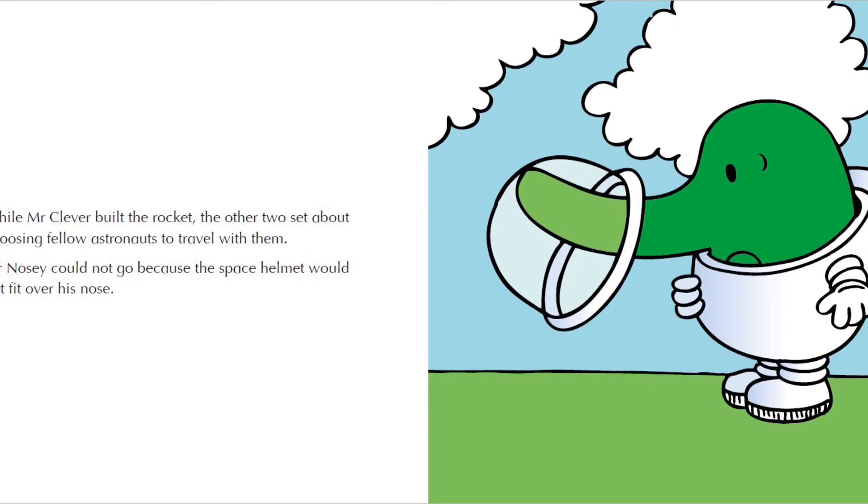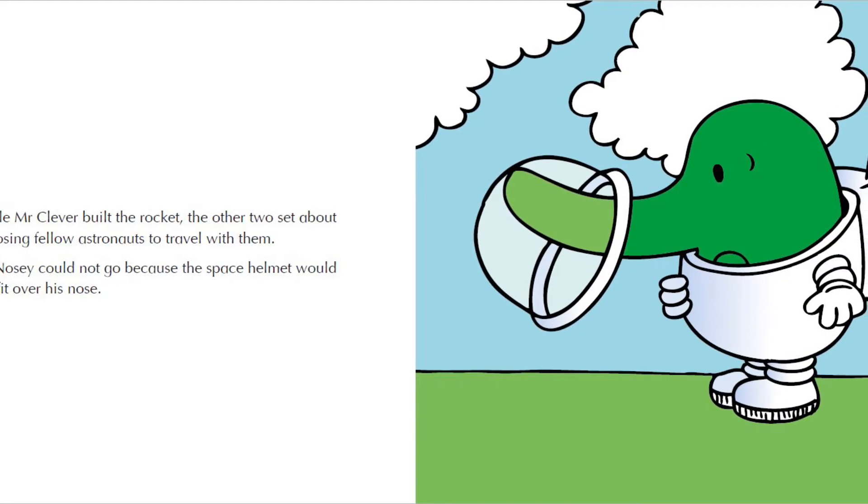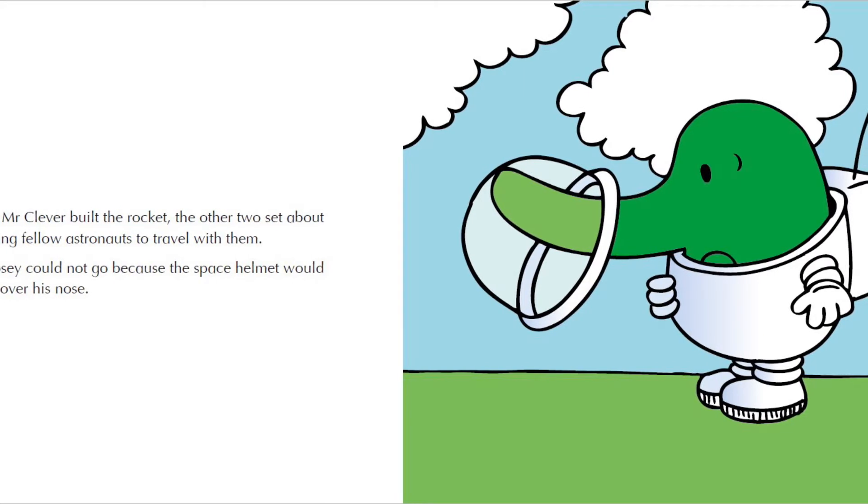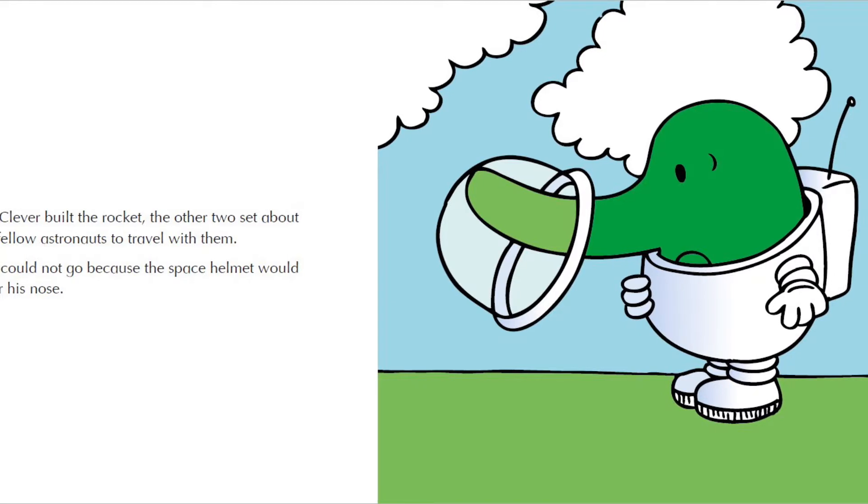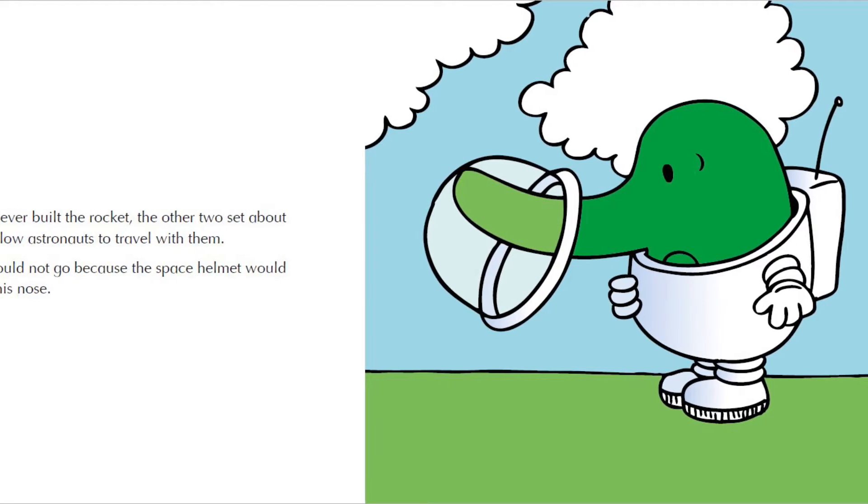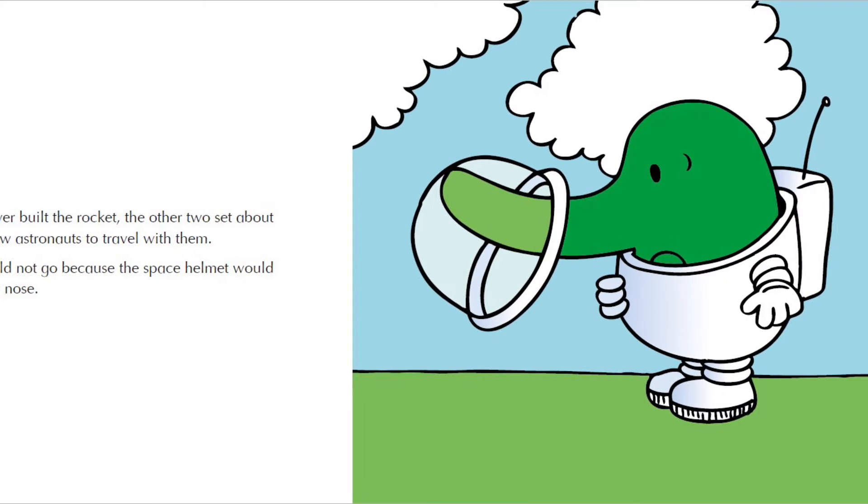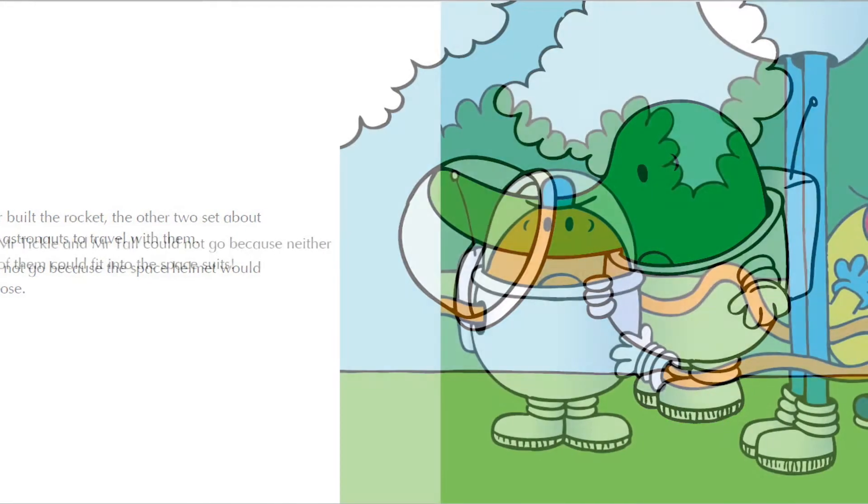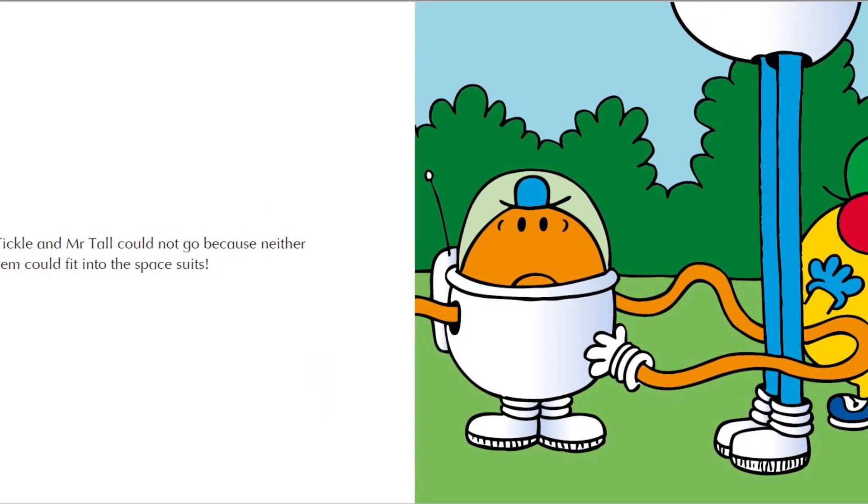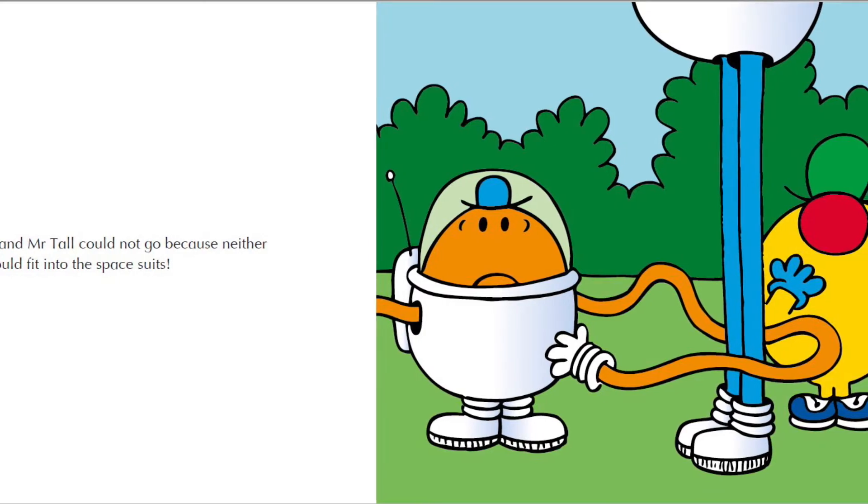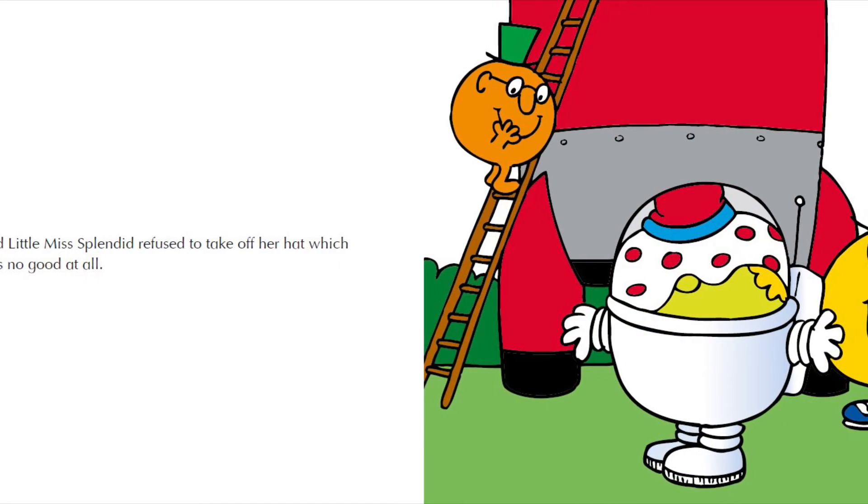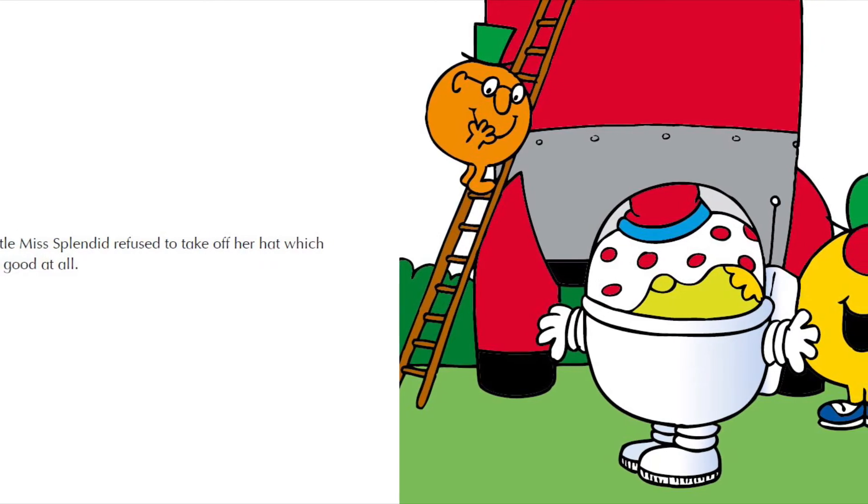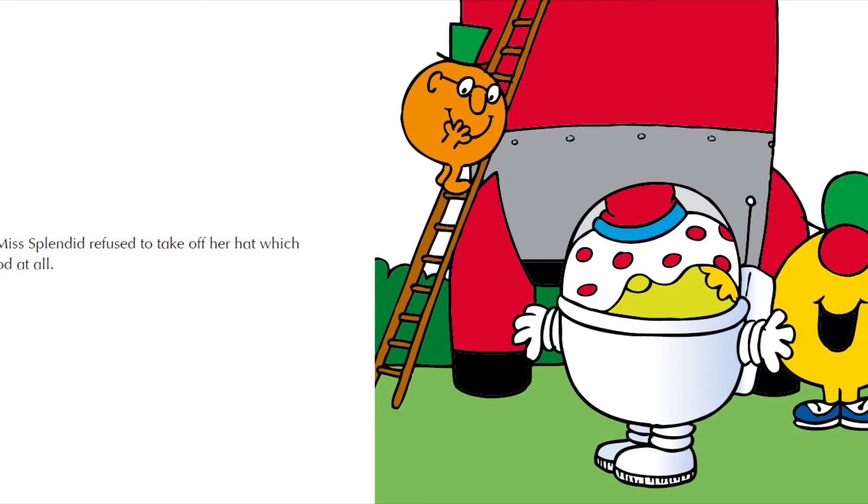While Mr. Clever built the rocket, the other two set about choosing fellow astronauts to travel with them. Mr. Nosey could not go because the space helmet would not fit over his nose. Mr. Tickle and Mr. Tall could not go because neither of them could fit into the space suits. And Little Miss Splendid refused to take off her hat, which was not good at all.